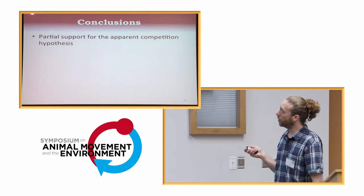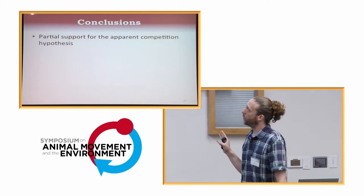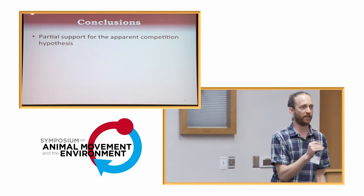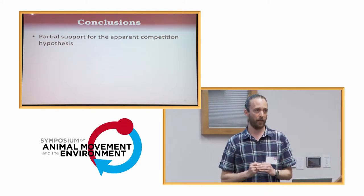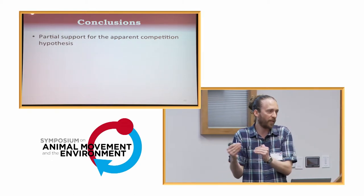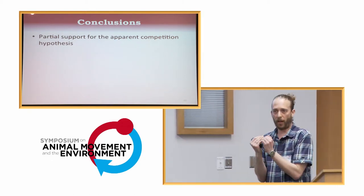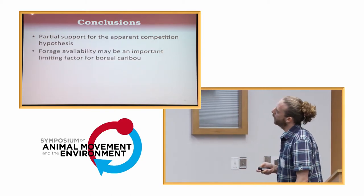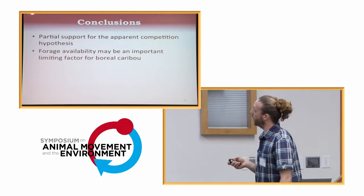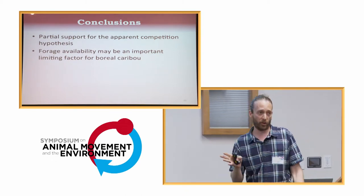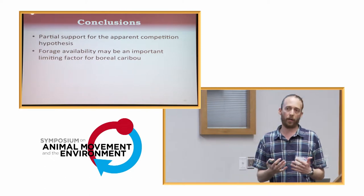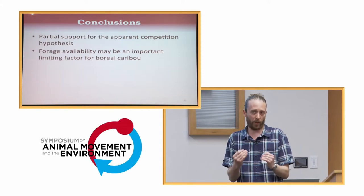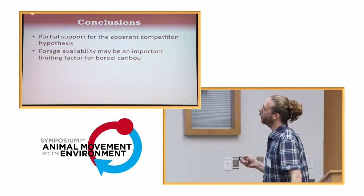So, to conclude, we have partial support for the apparent competition hypothesis, because we have the same individuals avoiding high wolf densities and avoiding moose habitat, which is an indication that moose habitat is an important component in their ecology, in addition to wolf habitat or wolf density. Forage availability may be a very important limiting factor for boreal caribou, judging from the very strong signal that we get from those individuals selecting over that small scale for abundant forage.